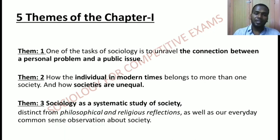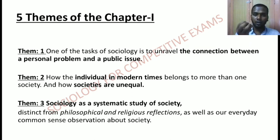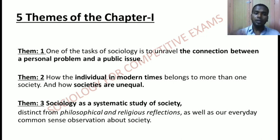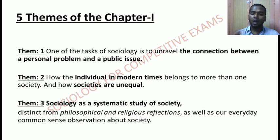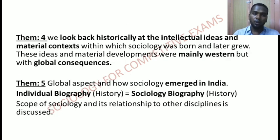This chapter has five different themes. Theme one is about the connection between personal problems and public issues. Theme two is about how the individual in modern times belongs to more than one society and how societies are unequal — a classmate may come from a particular place, religion, language, and state, giving each individual a different societal background and unequal opportunities. Theme three is sociology as a systematic study of society, helping us understand how sociology is a scientific study — not philosophical or religious reflection, and distinct from common sense.